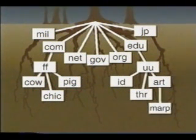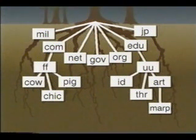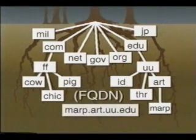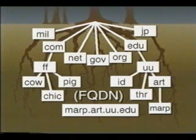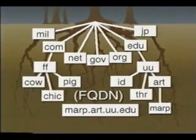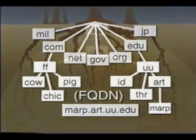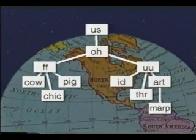Underneath these organizations reside the machine or host of the organizations. In this case, the machine named MARP in the art department. To find the fully qualified domain name, we start from the bottom of the roots with the machine named MARP and work our way through the entire domain name, writing the path from left to right, with each part of the name separated by a period.